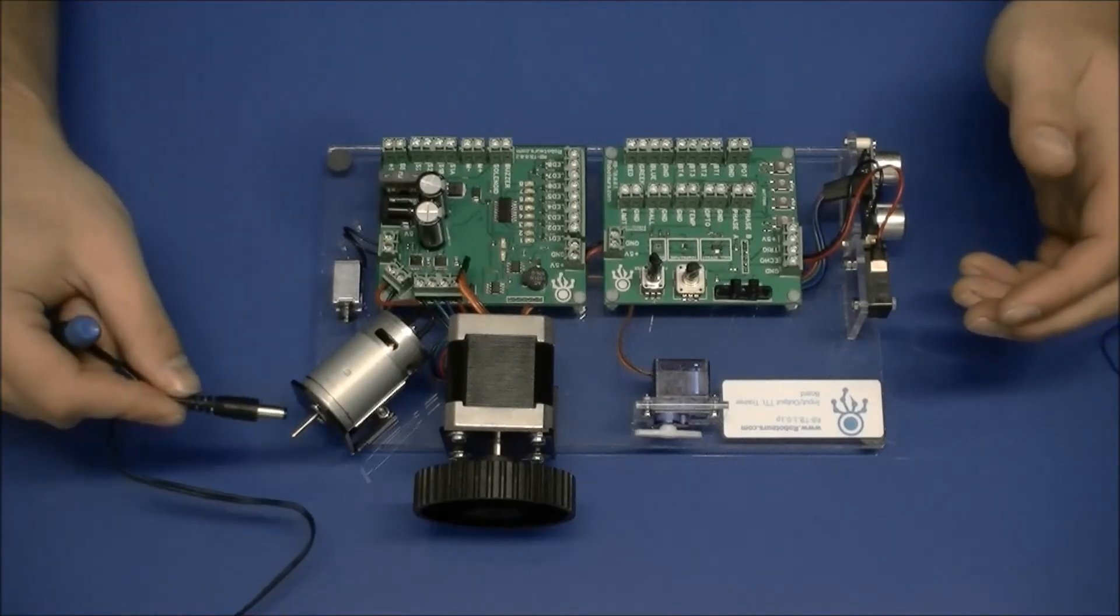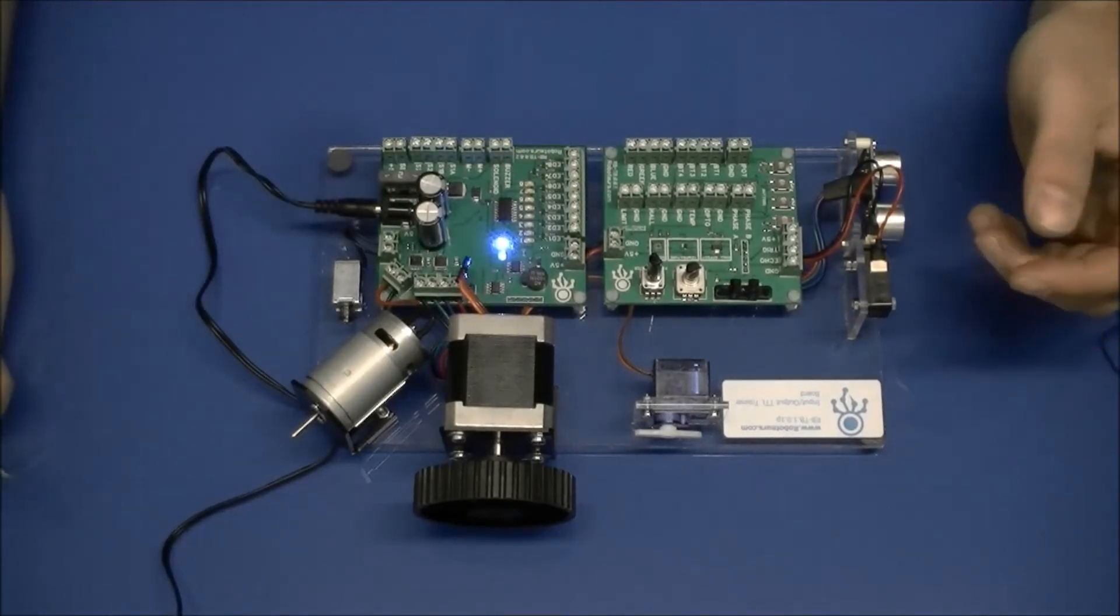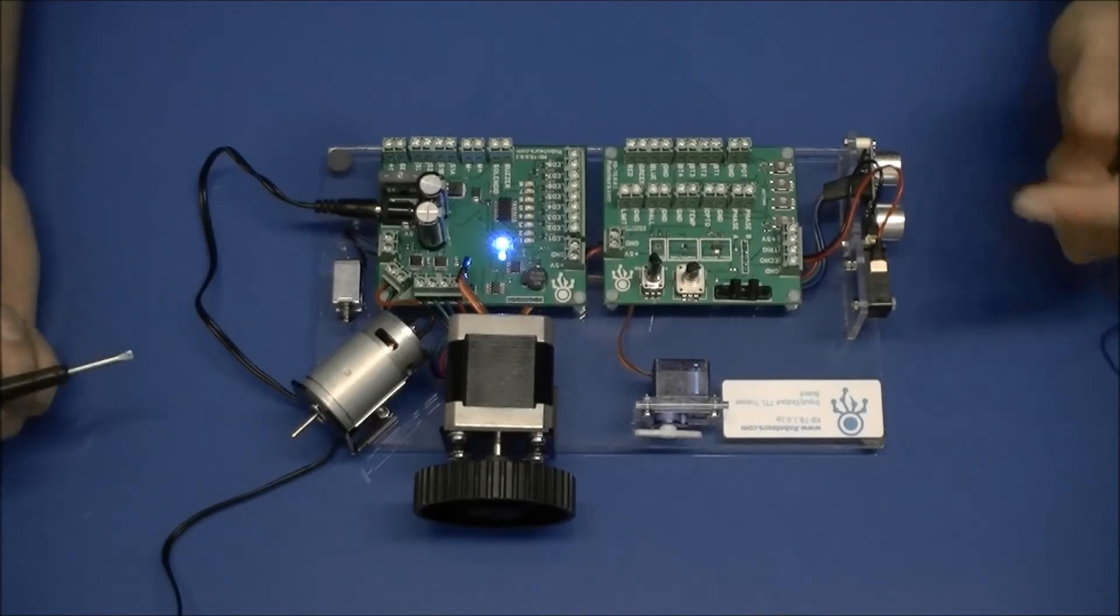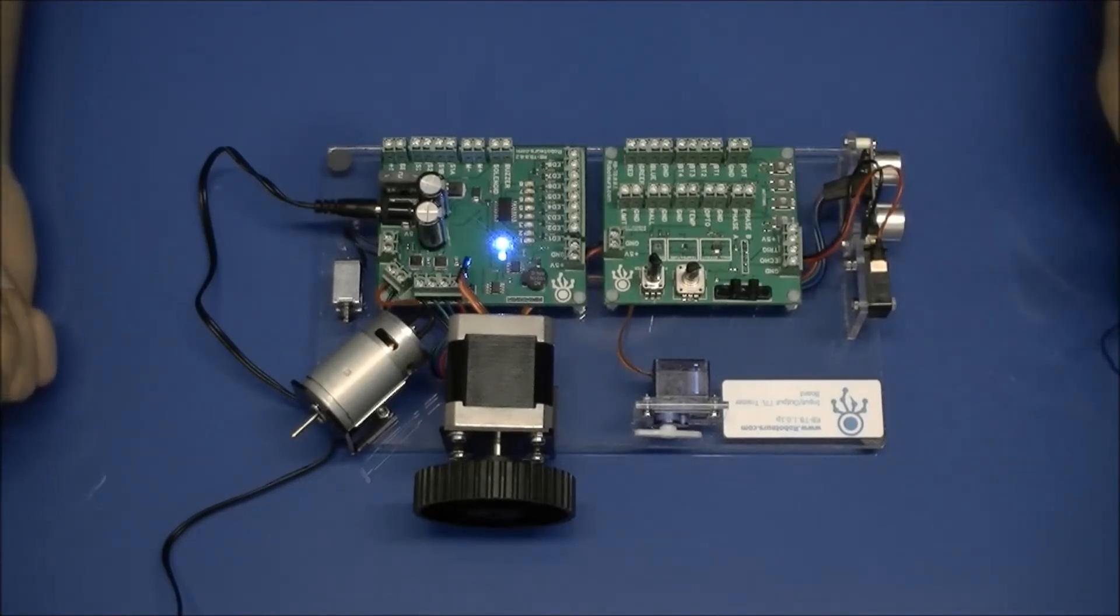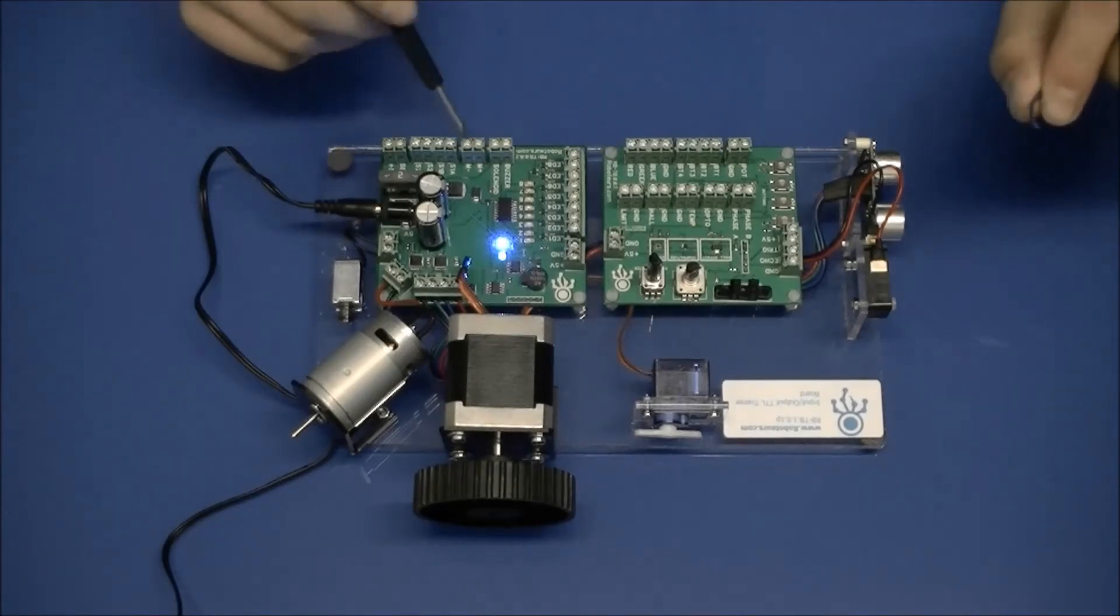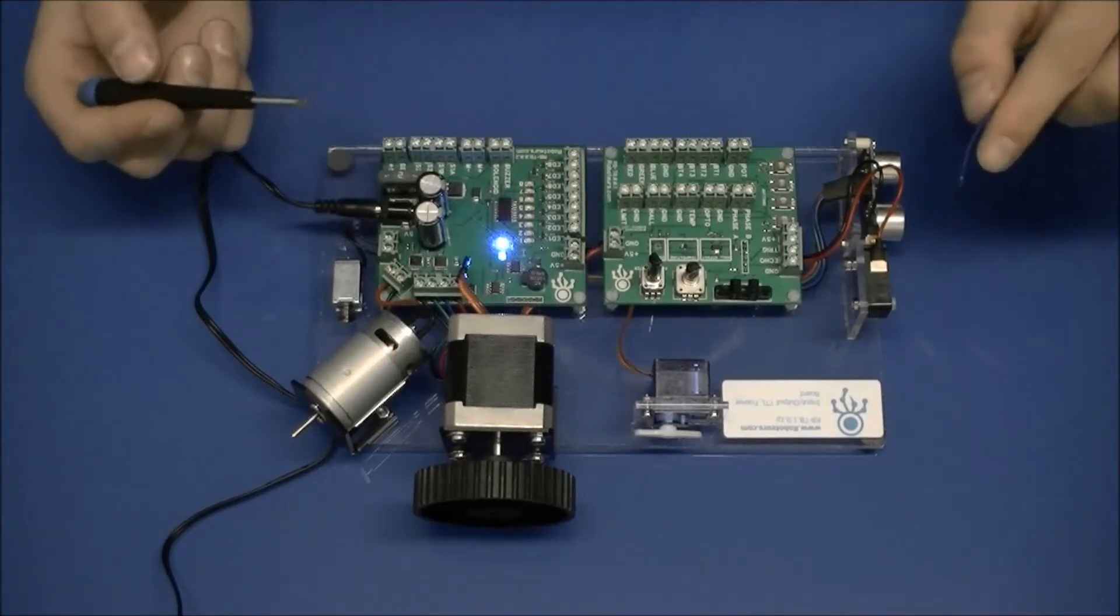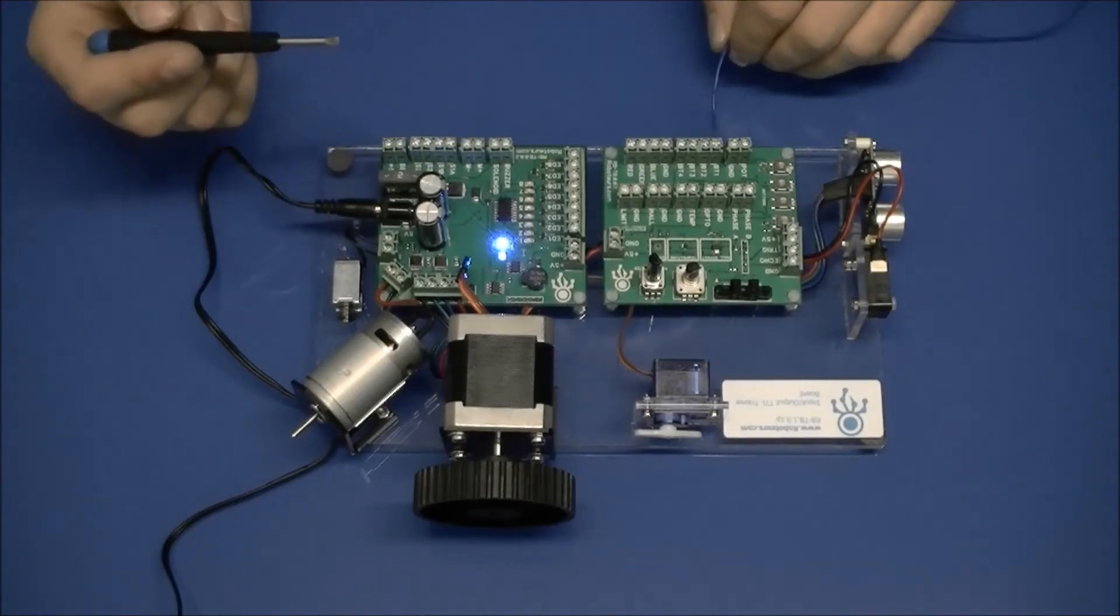It runs off a standard 5 volt barrel jack supply that plugs into the wall, so that's easily available. I'm going to demonstrate some of the inputs controlling some of the outputs. Keep in mind you could also use a microcontroller to control this board or to read this board. The first thing I'm going to do is one of the very basic ones.